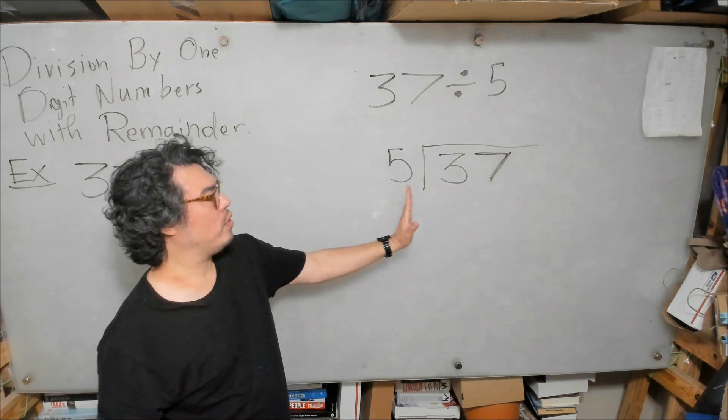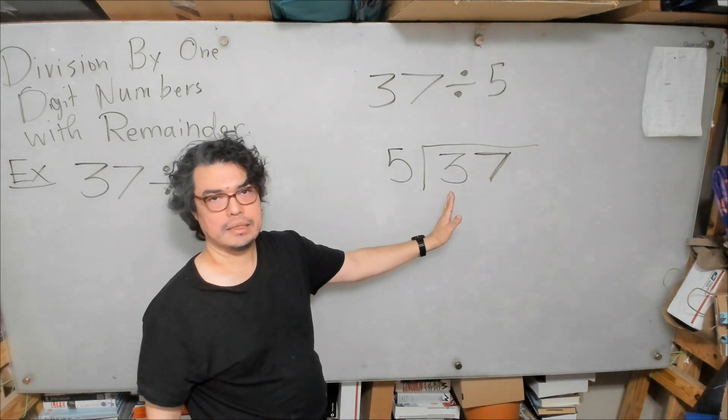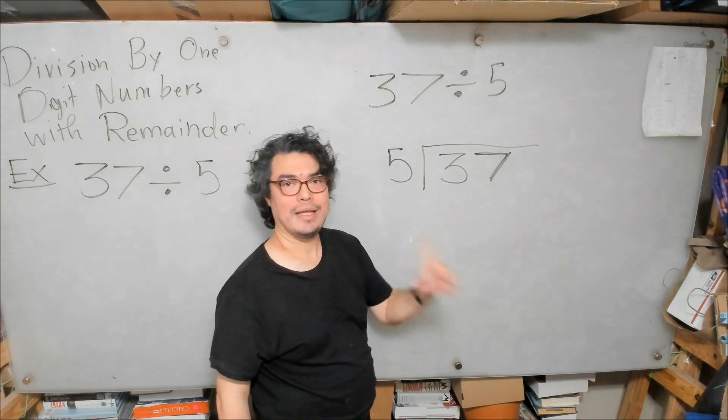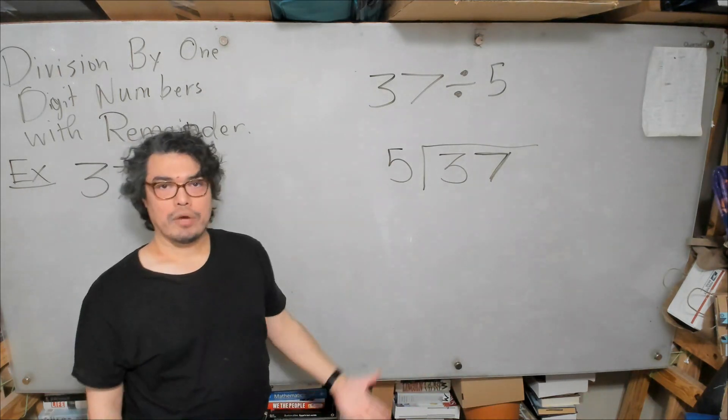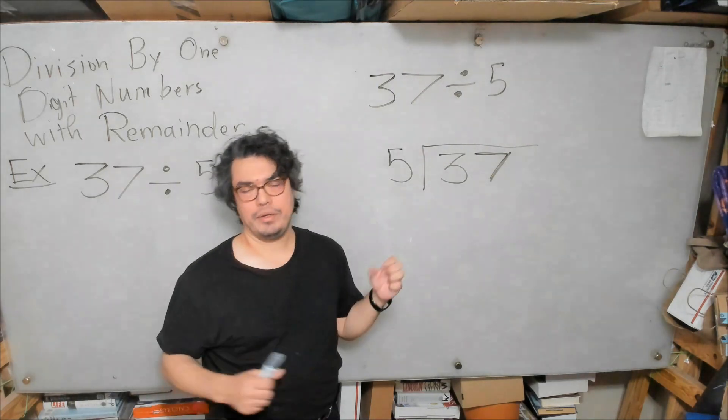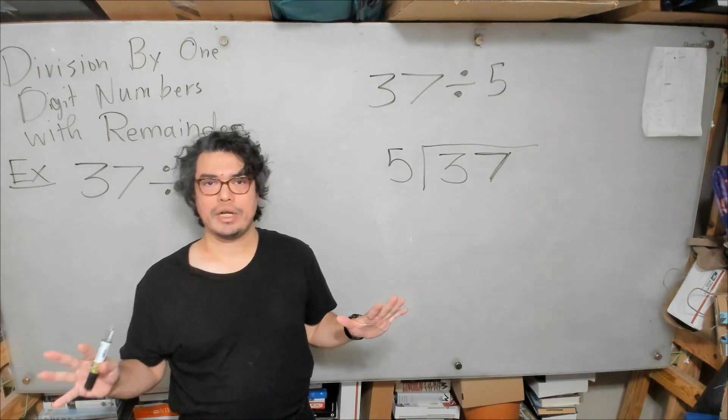I ask the question, does 5 go into 3? It doesn't. Does 5 go into 37? Aha! It does. We look at our multiplication table. We went through it earlier, so I'm going to go through it quickly now.